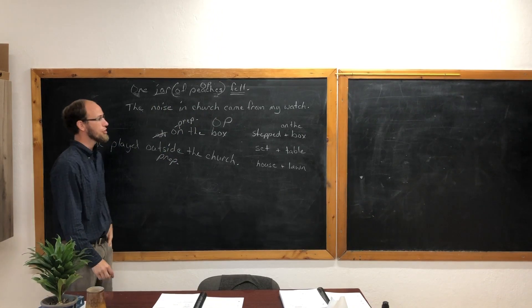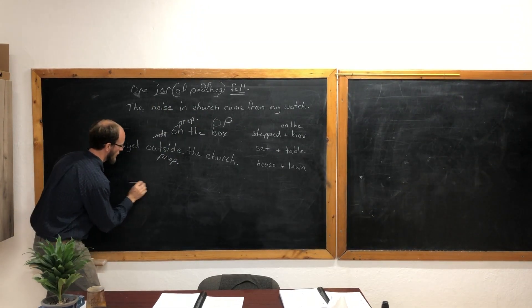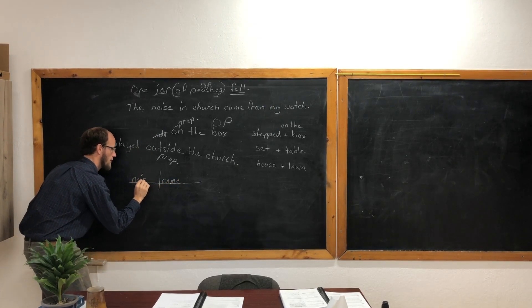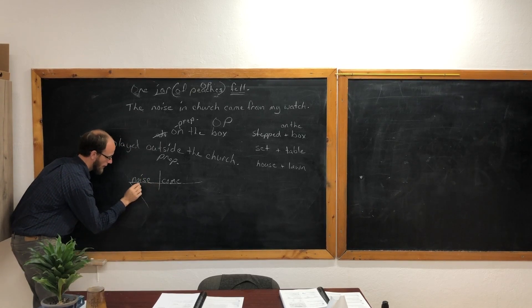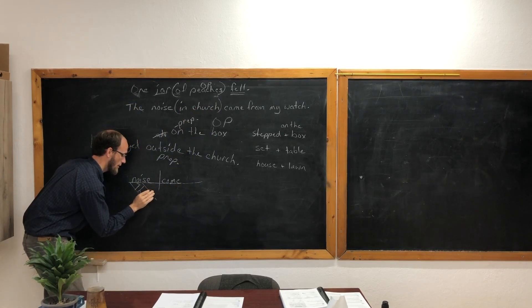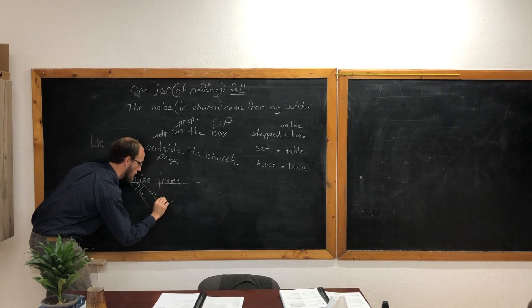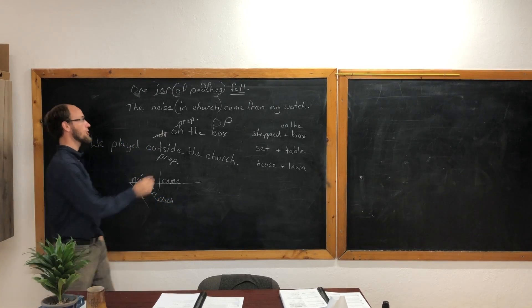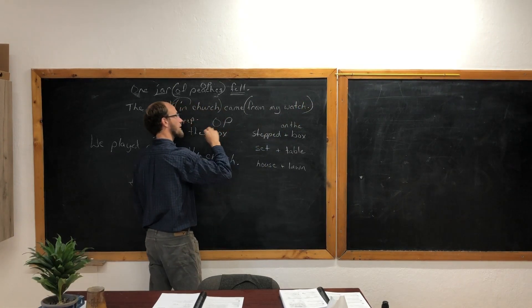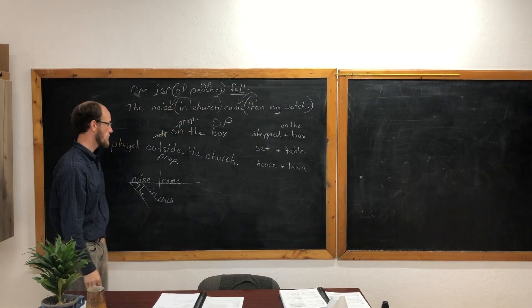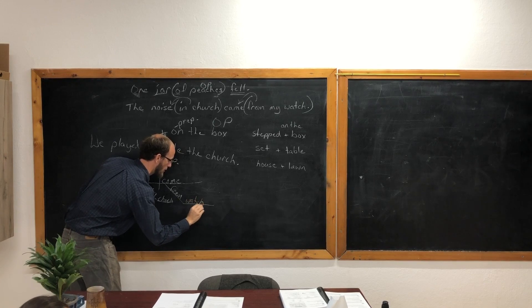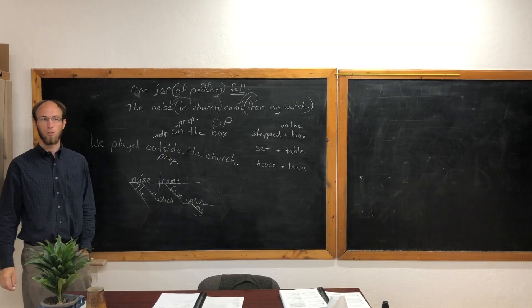Let's diagram the sentence. A noise in church came from my watch. What is the verb? Came. Who or what came? Noise. Can we put anything under noise? A. Anything else? In church. That's a prepositional phrase. So we put the preposition on this line: in, straight line, church. And that's saying which noise, the noise in church. It's modifying noise. Any more prepositional phrases in here? And what is that modifying? Came. It's telling kind of where it came from. So we'll put from my watch under came. From, watch. And it's my watch, from my watch. Okay, carry on.